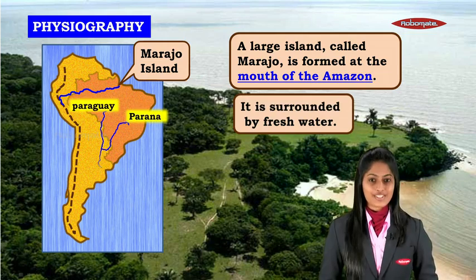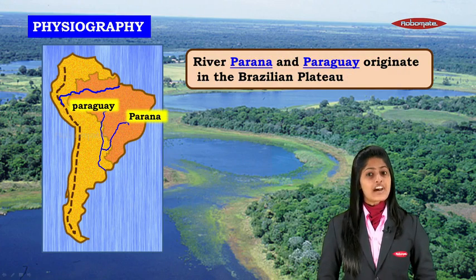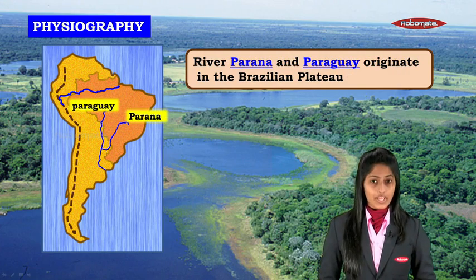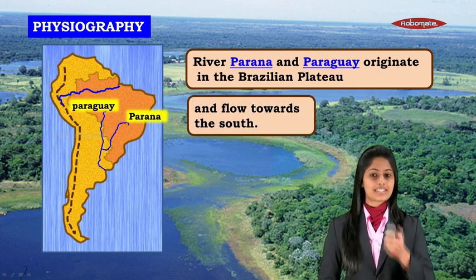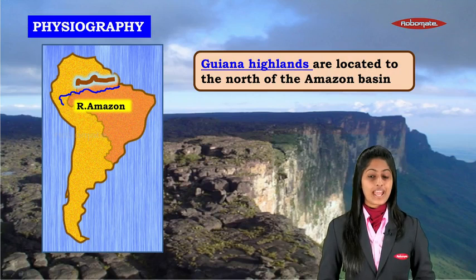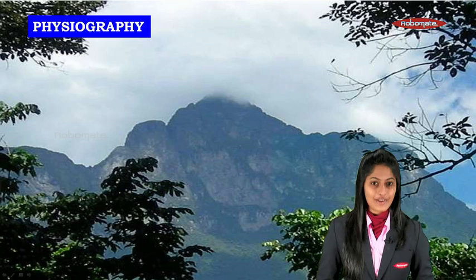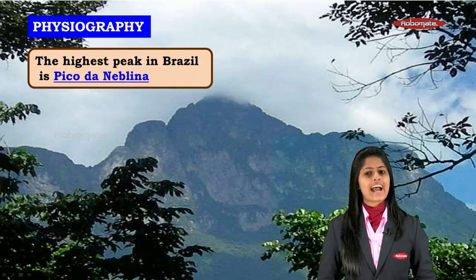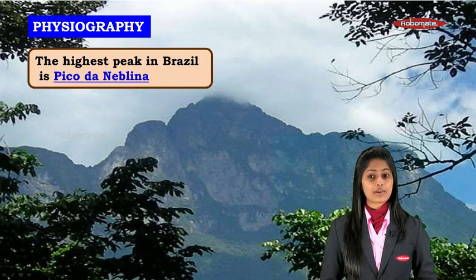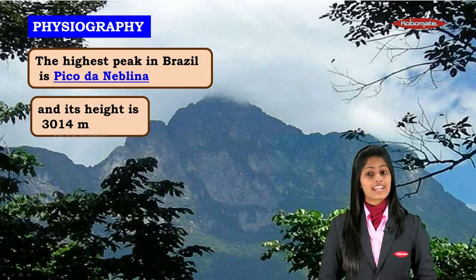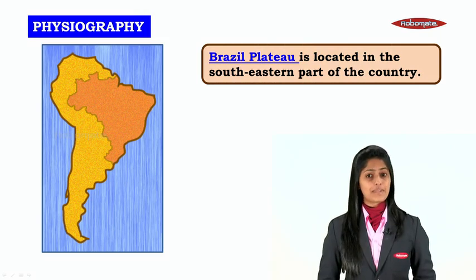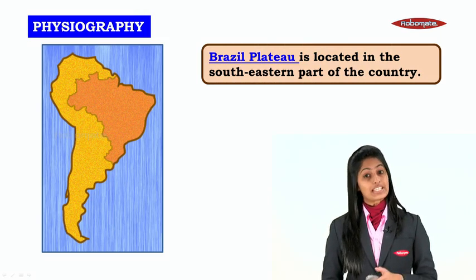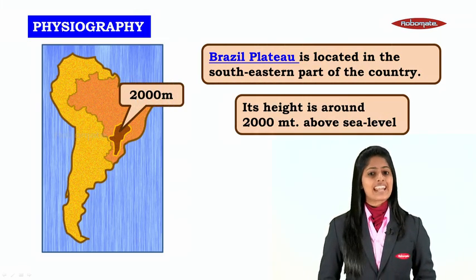The rivers Paraná and Paraguay originate in the Brazilian Plateau and flow towards the south. Joanes Island is located to the north of the Amazon Basin. The highest peak in Brazil is Pico da Neblina, with a height of 3,014 meters.